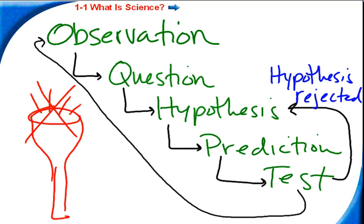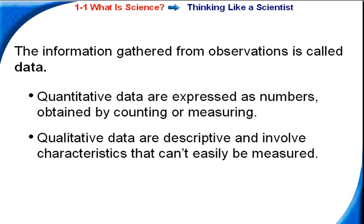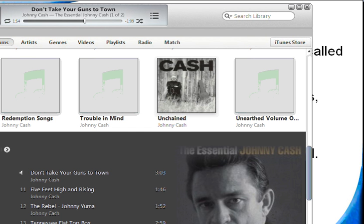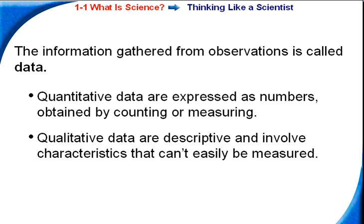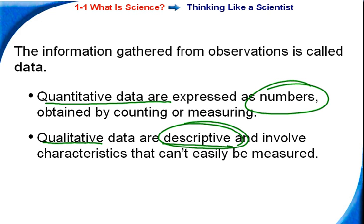But mainly, scientific method, observation, question, hypothesis, prediction, and then your test. Now the results of your test usually gives you data. Now there's two different types of data. There's quantitative data, which is numbers. Okay? And then you have qualitative data, which does not involve numbers. It involves descriptions. Okay? So descriptive data is qualitative data, and quantitative data is based on numbers.